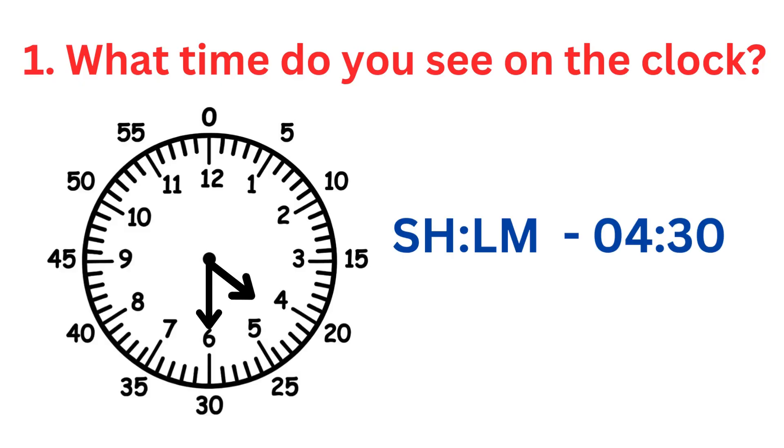Short hand near 4, long hand on 6. Correct — it's 4:30, half past 4. It is 4 hours and 30 minutes.